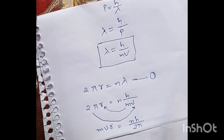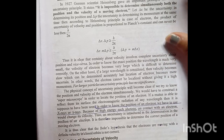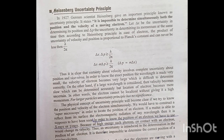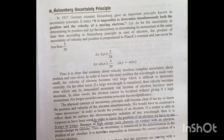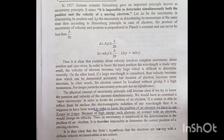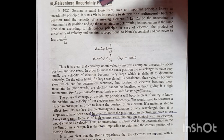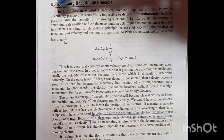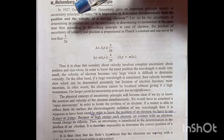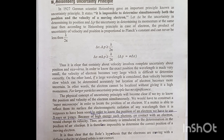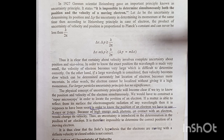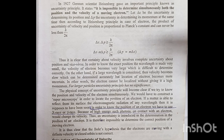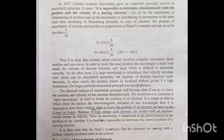Next is Heisenberg's uncertainty principle, relevant for 12th, BSc, and MSc students, as well as competitive exams like JEE. In 1927, German scientist Heisenberg gave an important principle known as the uncertainty principle. It states that it is impossible to determine simultaneously both the position and the velocity of a moving electron.